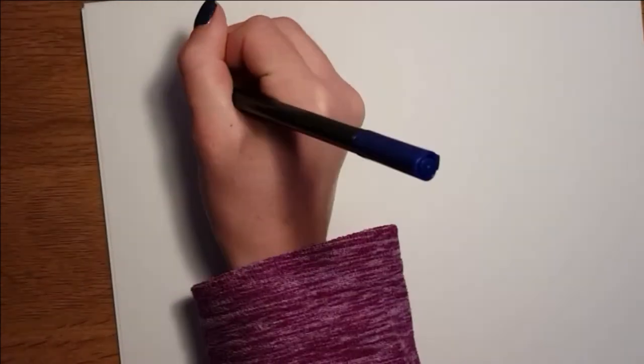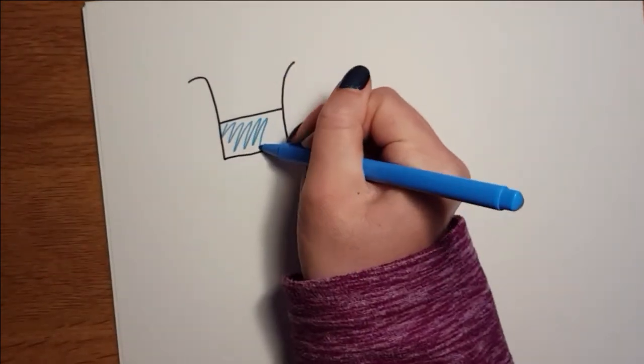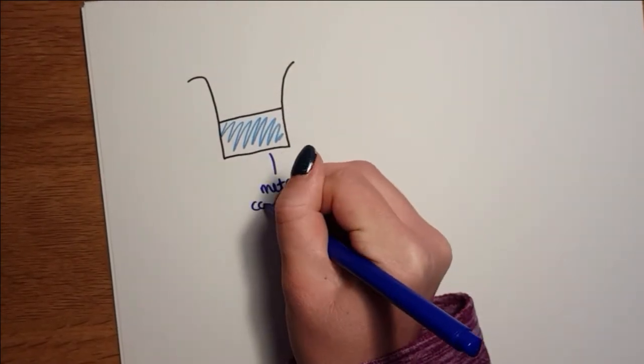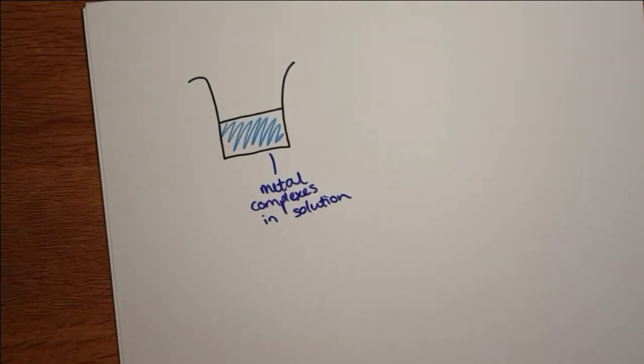Now back to the lasers. How can they be used to produce nanoparticles? Lasers emit a high intensity beam of visible light which is a type of electromagnetic radiation with a wavelength of 400 to 800 nanometers.